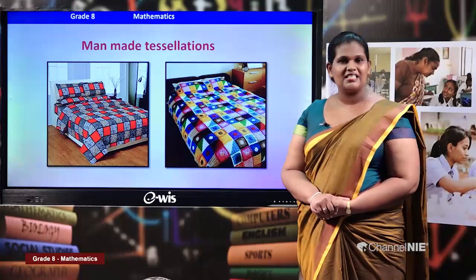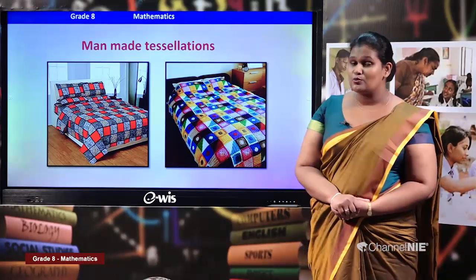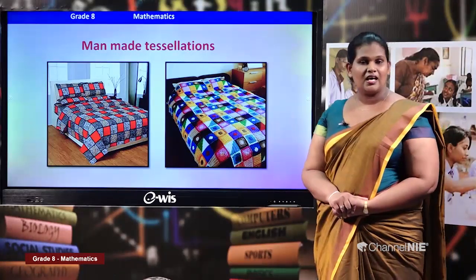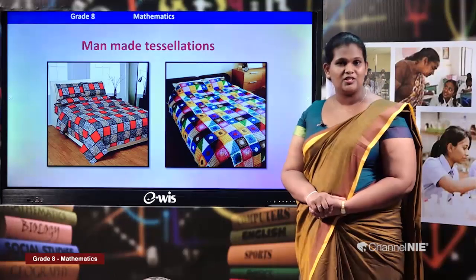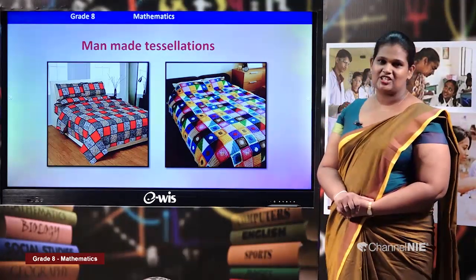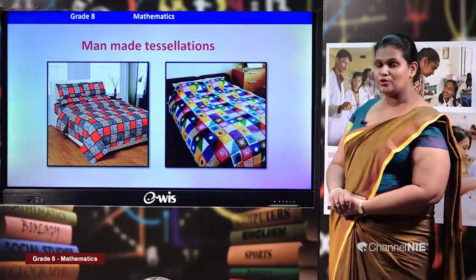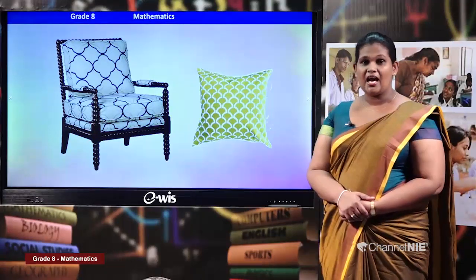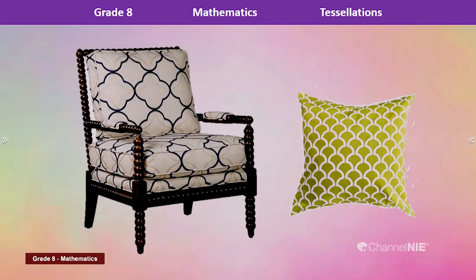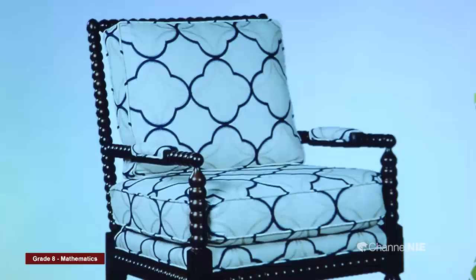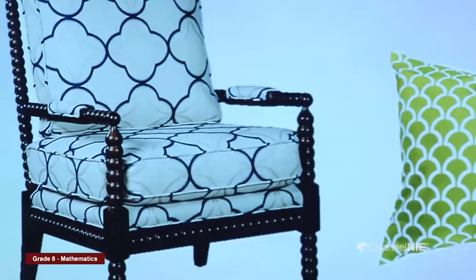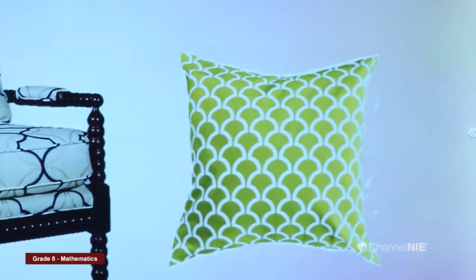Can you remember the tessellations you created in grade seven? Your teacher might have asked you to make beautiful wall hangings as an activity. Now here I have a chair — what can you say about the material they have used to decorate it? Can you see a tessellation there? We can see two types of figures in that material, nicely designed as a tessellation.